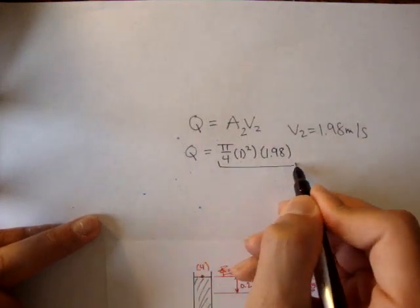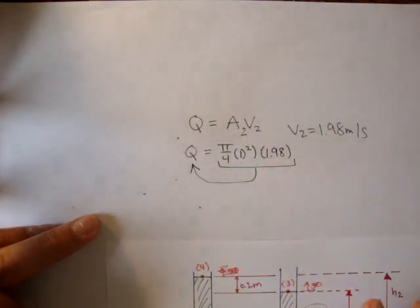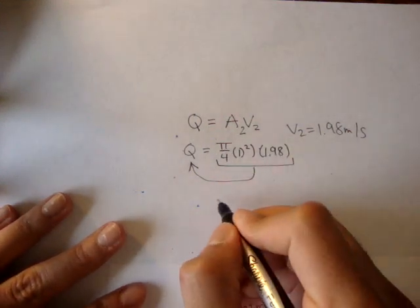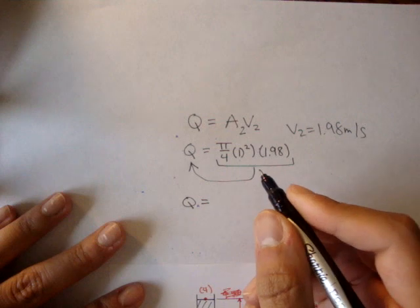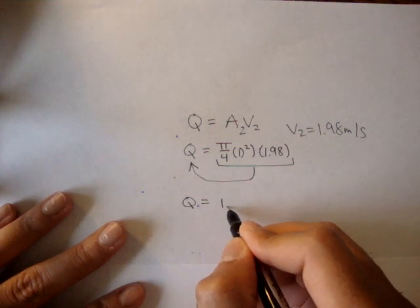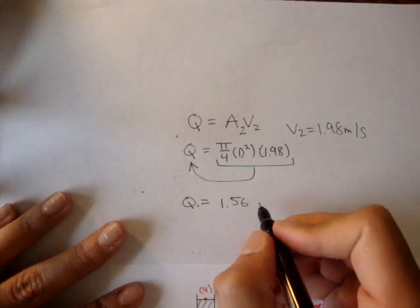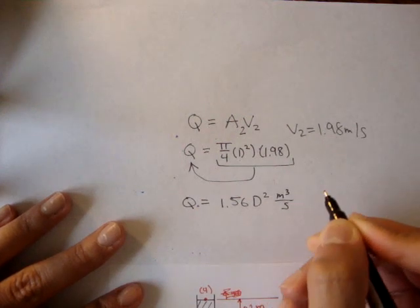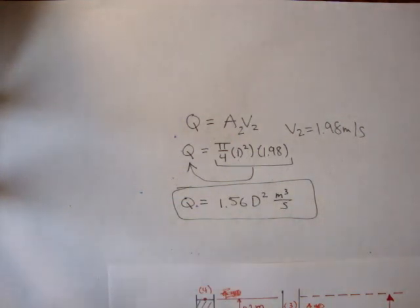This is the flow rate. And if we solve all that out, pi over 4 times 1.98, we get the flow rate is equal to about 1.56 d squared meters cubed per second. And that's our answer. The flow rate in the tube. Thank you.